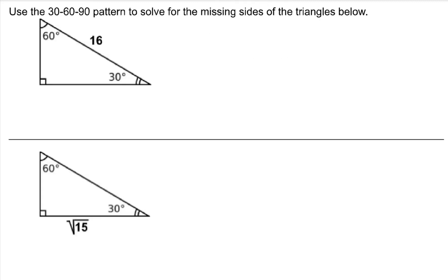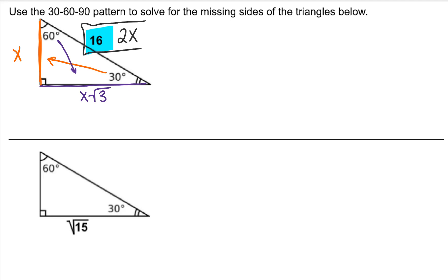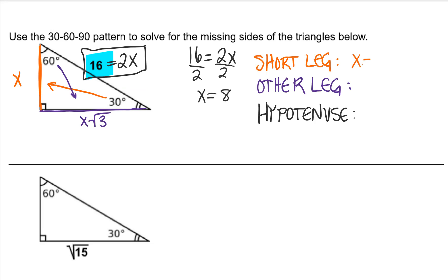Let's keep using the pattern. Identify the sides: here is the short leg, labeled x; here is the other leg, corresponding to x root 3; and our hypotenuse corresponds to 2x. So 16 is equal to 2x. Solving for x, x equals 8 — that is our short leg. Then our other leg is x times root 3, which is 8 root 3. The hypotenuse was what was given to us.